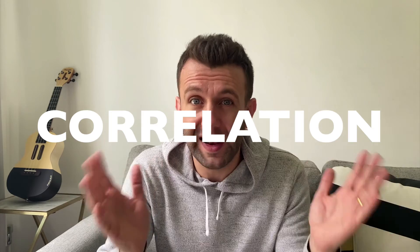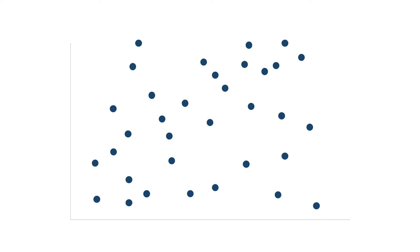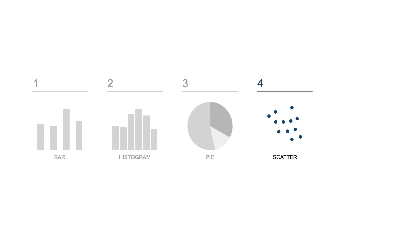In fourth place we have scatter plots. If you're looking to show correlation — how two things relate to each other — scatter plots are your best tool. They can show that a correlation exists or that it doesn't, display clustering trends, or spot outliers. They're probably one of the most persuasive charts to use if you want to convince somebody of something.